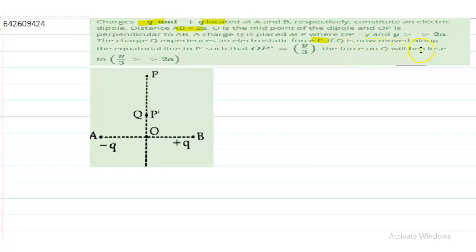So what we have given: we have given a dipole. What is the dipole moment? p is equal to q times twice of a.